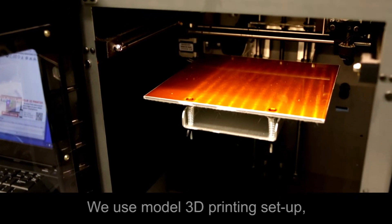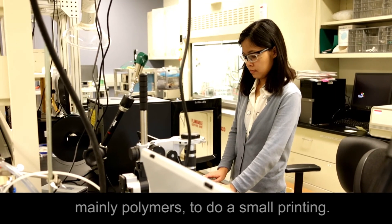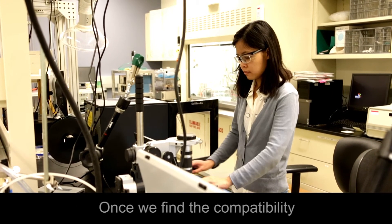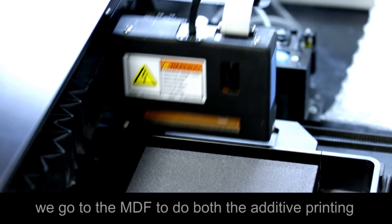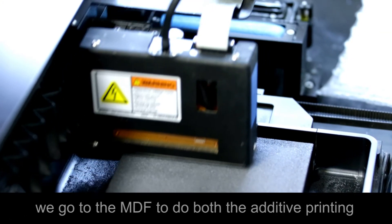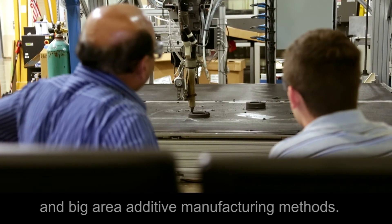We use a small 3D printing setup with polymers for initial testing. Once we find the compatibility of the polymer with the magnet powders, we go to the MDF for both binder jet processing and big area additive manufacturing.